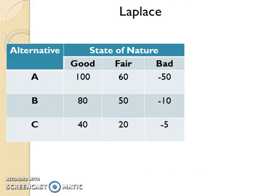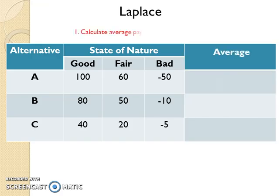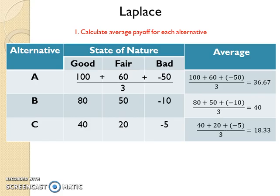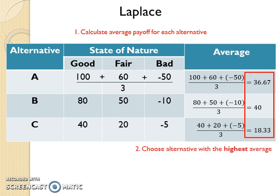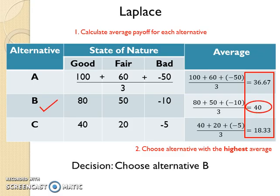To make a decision by using the Laplace method, first add a column to the payoff table for average and then calculate the average payoff for each alternative. The average payoff is calculated by taking the summation of all payoffs for that alternative and dividing by the number of states of nature. Identify the highest average payoff. Here the highest average payoff is 40, therefore the decision is to choose alternative B.